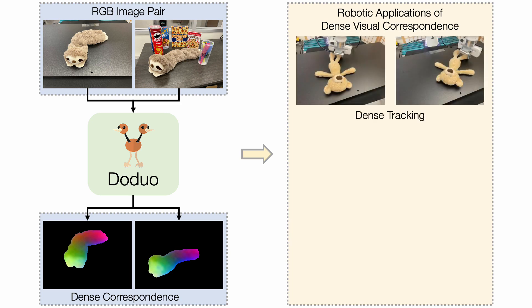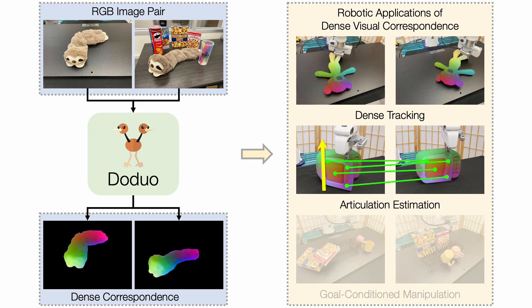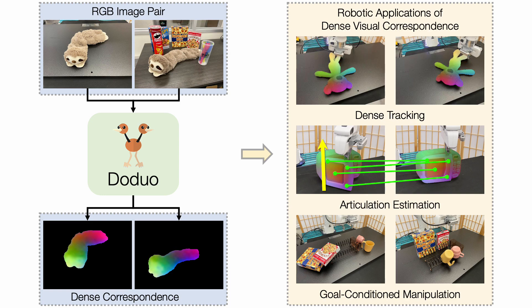In this project, we demonstrate the applications of dense tracking — tracking any pixels using only pairwise correspondence — articulation estimation, estimating the articulation structure of objects, and goal-conditioned manipulation, manipulating objects based on the predicted dense correspondence.